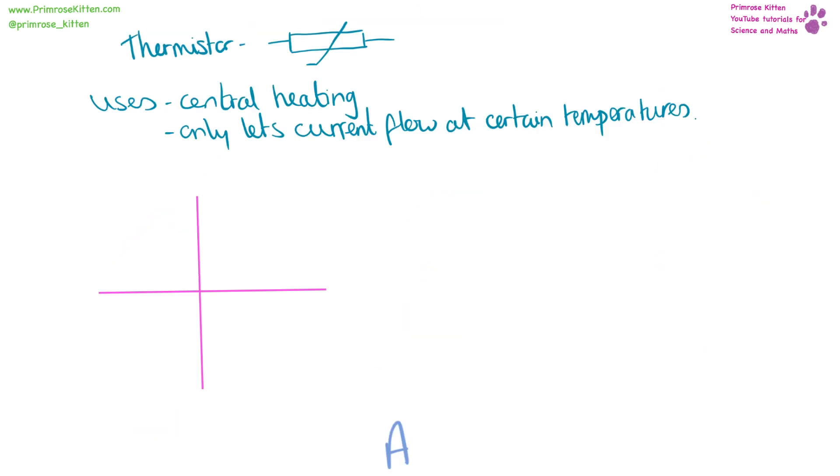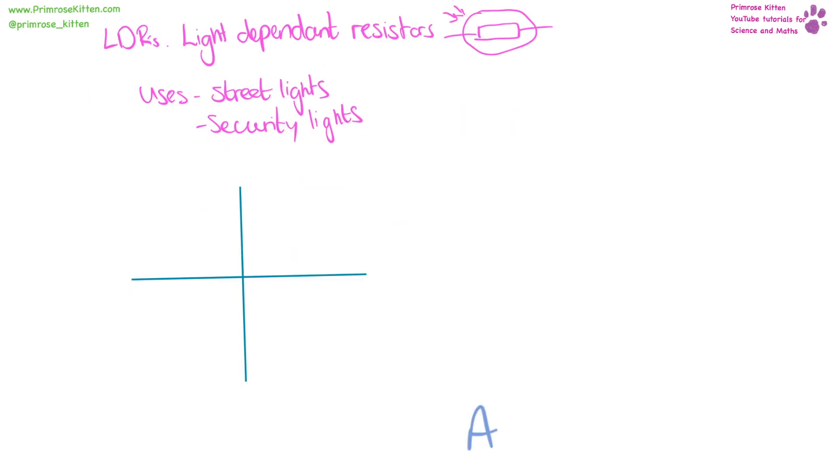A thermostat is used in stuff like your central heating and it's only gonna let current flow at certain temperatures. For example, at a high temperature our graph looks like this. Whereas at a low temperature the graph is going to look much lower. So as the temperature changes the resistance changes. For a light-dependent resistor, whether the lights are on or off, it's going to depend on the quantity of lights. We can use this as street lights or security lighting. So if we have a bright light, that's what our graph is going to look like. But then if the light dims it is going to change. So the resistance flowing through the circuit changes with the amount of light.